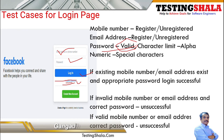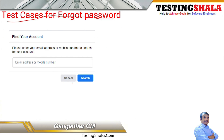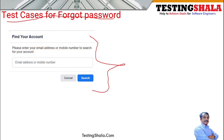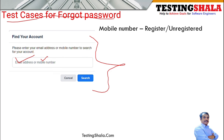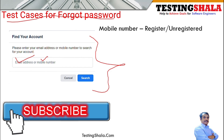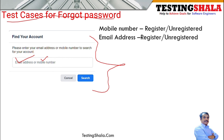If you know only your email address or phone number but have forgotten your password, click 'Forgot Password.' For the forgot password functionality, only one field is available — finding your account via email address or mobile number. You should test with both a registered mobile number and an unregistered mobile number. If a registered number is entered, you should get the appropriate next page; if unregistered, you should get an error message saying the number is not registered with Facebook.